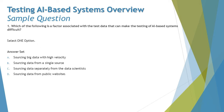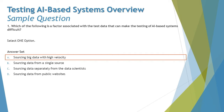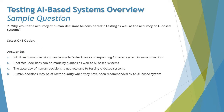To conclude, the right answer is A — sourcing big data with high velocity — because getting a large source of data for an AI system while also requiring high velocity, meaning frequently needing a lot of information, is always a very difficult job.